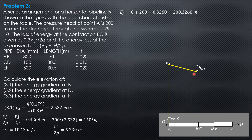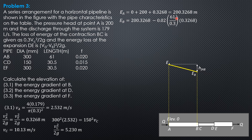The elevation of the energy gradient at B equals the energy at A minus the pipe friction loss in AB. The pipe friction loss in AB is: friction factor 0.02 times length 61 divided by diameter 0.3, times velocity head in AB (which is 0.3268 meters). So the elevation of the energy gradient at B is 199.0 meters.